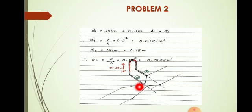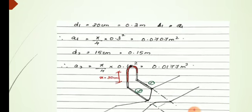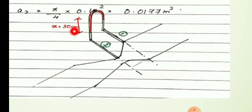Position one is the main pipe and position two is the throat level. We attach an inverted U-tube differential manometer with two limbs. The oil of specific gravity 0.6 is used as the manometric fluid. The difference in the two limbs is 30 cm.